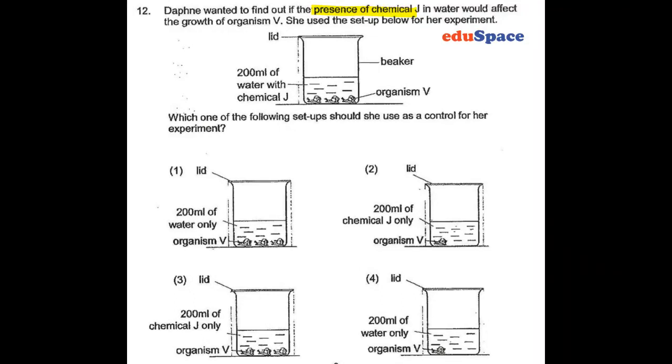In question 12, Daphne wanted to find out if the presence of chemical J in water would affect the growth of organism V.